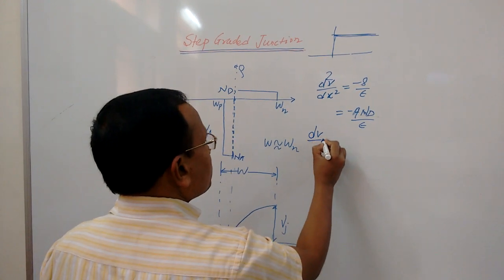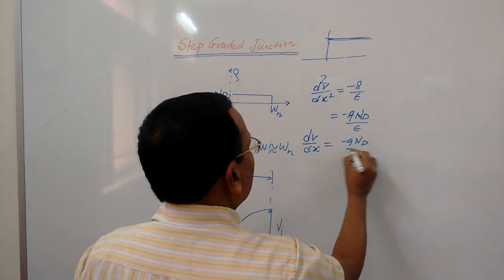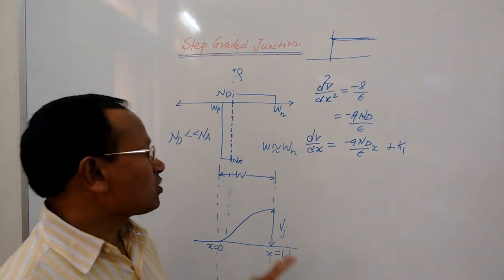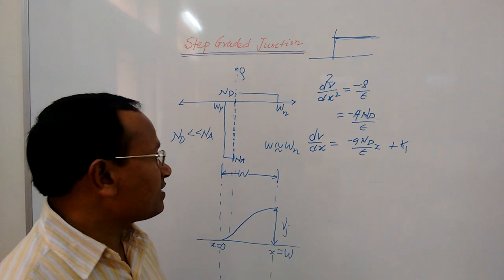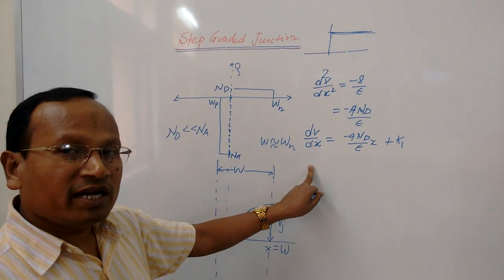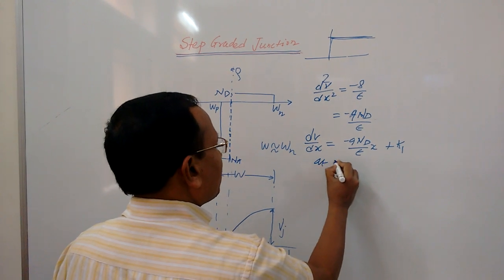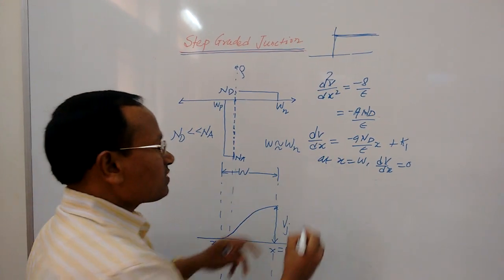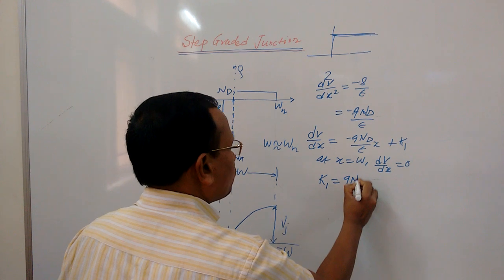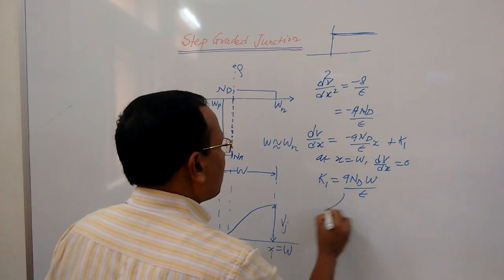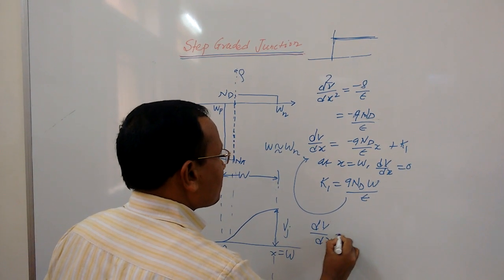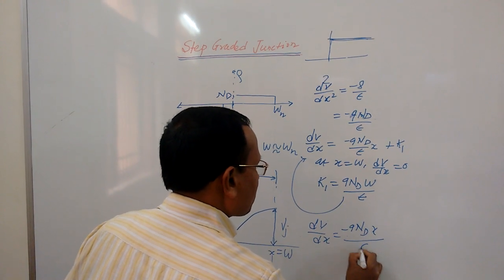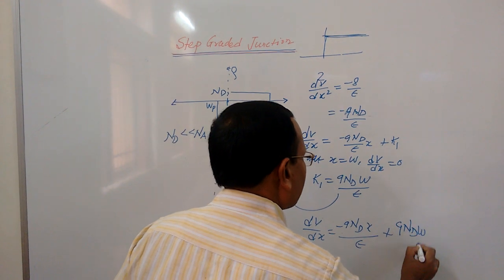To get dV/dx, I will integrate, giving minus q·Nd over epsilon times x plus some constant K1. We determine K1 using the boundary condition that at x equal to W, dV/dx is 0. Substituting this condition, we get K1 equal to q·Nd·W divided by epsilon. Substituting this back, dV/dx equals minus q·Nd·x over epsilon plus q·Nd·W over epsilon.